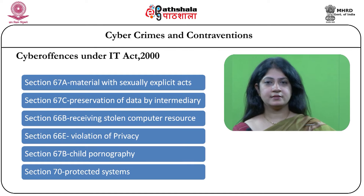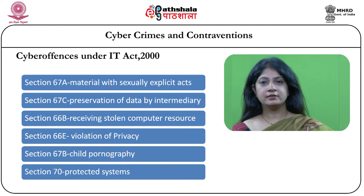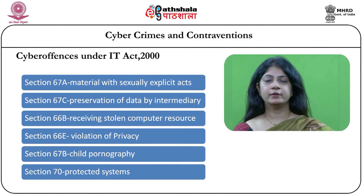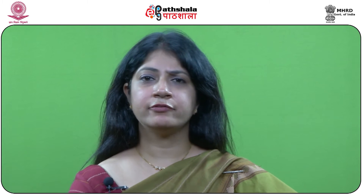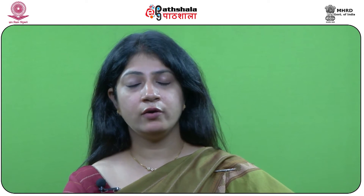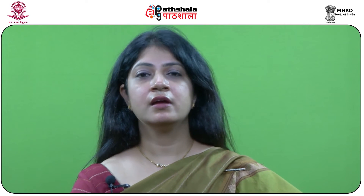Section 70 talks about protected systems — systems which are sensitive to the nation and defense. Fiddling with them or trying to cause any kind of damage amounts to an offense. These offenses have various punishments right from up to 3 years or fine or both, and certain offenses have punishment extending to 5 years, from 5 years to about 7 years, or 10 years also in case of repetitive offenses. Therefore, these are stringent provisions which deal with and combat cyber crime in the country.